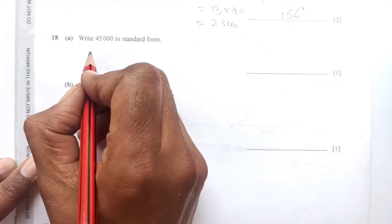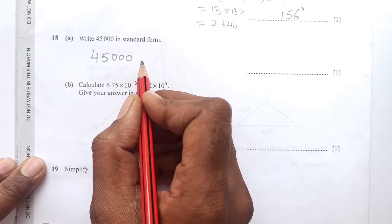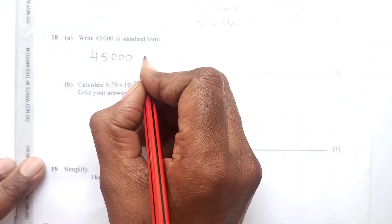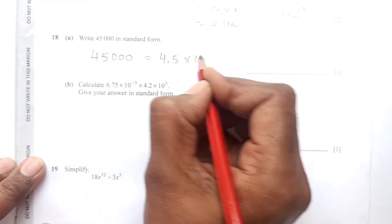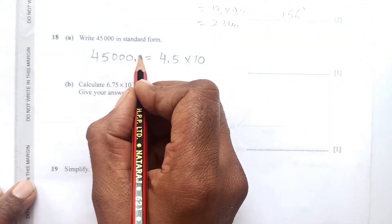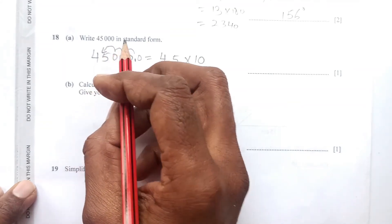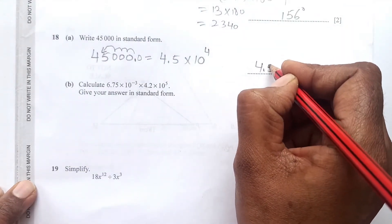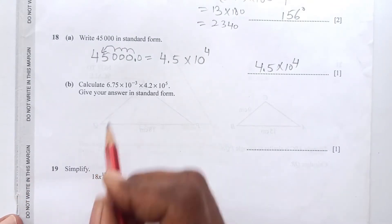Question 18a: write 45,000 in standard form. To write in standard form, the leading digit must be less than 10, so we write 4.5. The decimal point shifts four places to the left, so the answer is 4.5 × 10⁴.